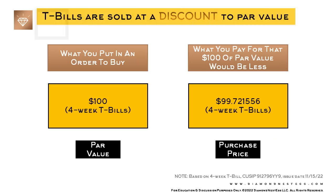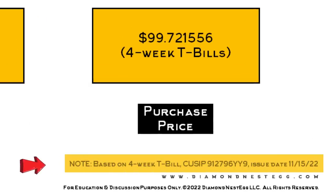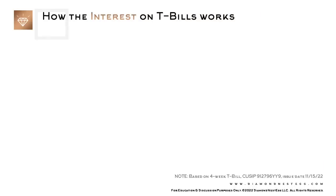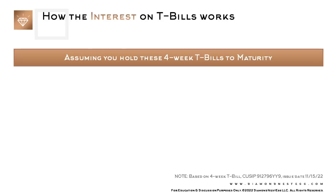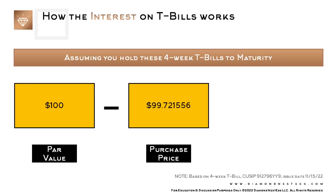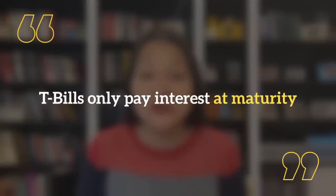This is what we mean when we say that T-bills are sold at a discount to par value. I chose this odd price because I'm using a real-life example of the most recently auctioned four-week T-bill at the time of this taping. Moving on to how the interest on T-bills works: assuming you hold these T-bills to maturity — the entire four weeks — what you would get back after the T-bills mature is this $100 par value. Subtract out the original purchase price of $99.721556, and this $0.278444 difference is the interest earned. T-bills only pay interest at maturity.